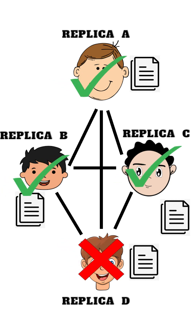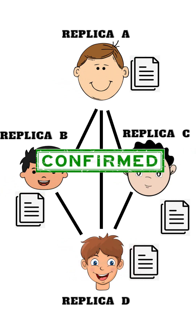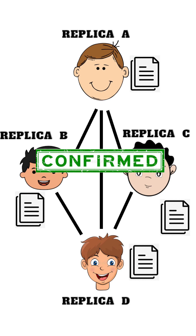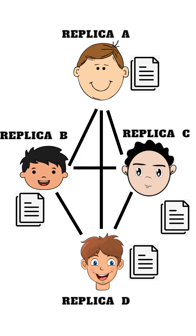If more than two-thirds of the replicas agree that the transaction is valid, it is considered to be confirmed. PBFT is designed to handle Byzantine failures, which occur when a node in a network behaves in unpredictable or malicious ways.